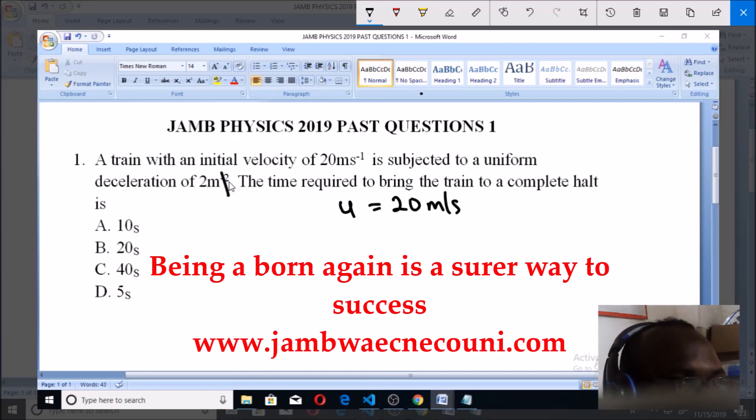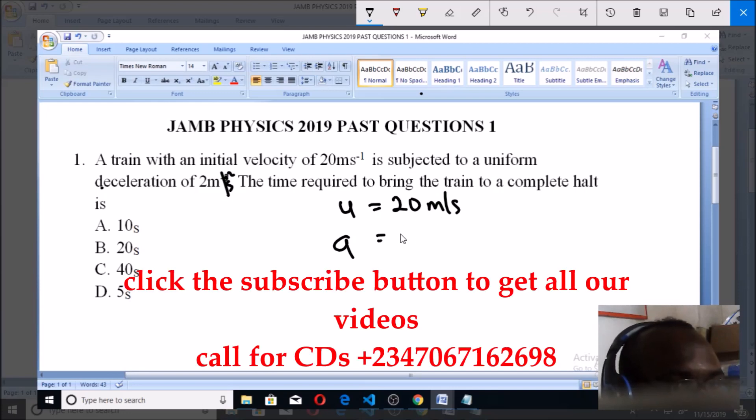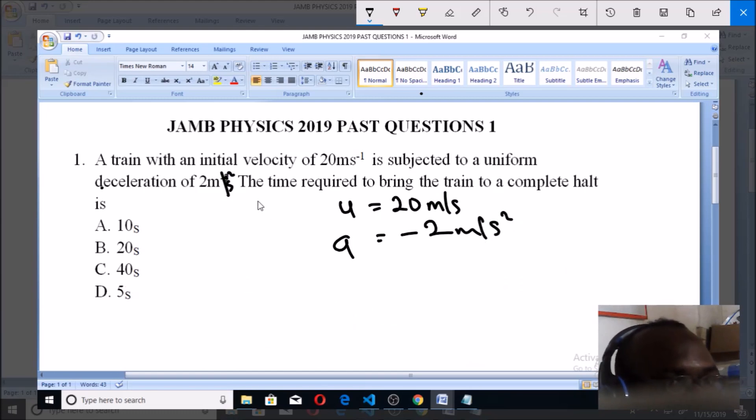So this is 2 meters per second squared. The acceleration, because it's deceleration, has to be negative, so minus 2 meters per second squared. Now the time required to bring the train to a halt—so you're looking for t.